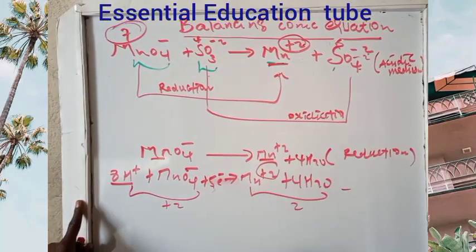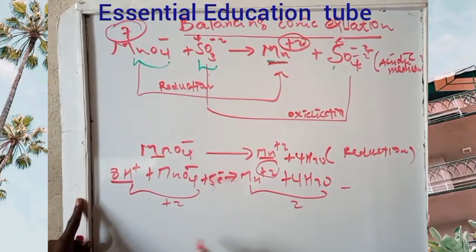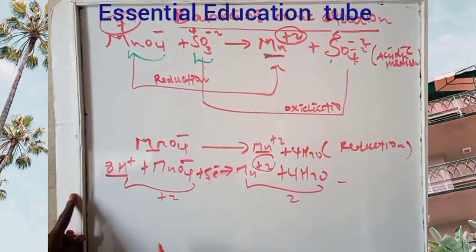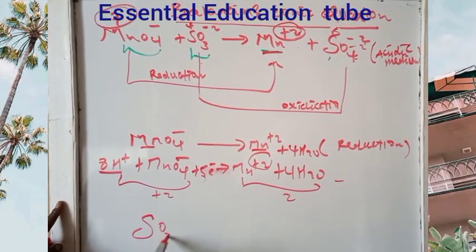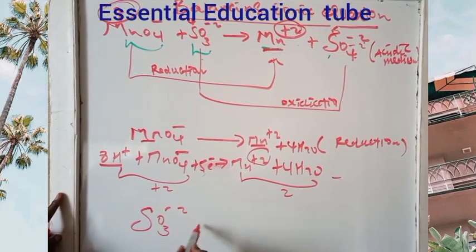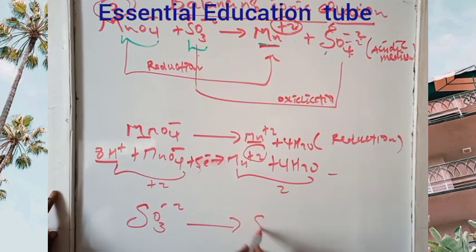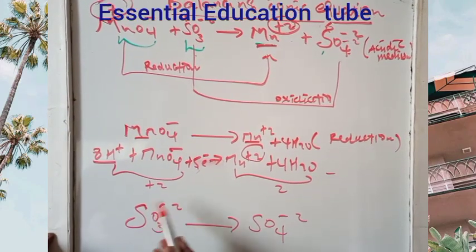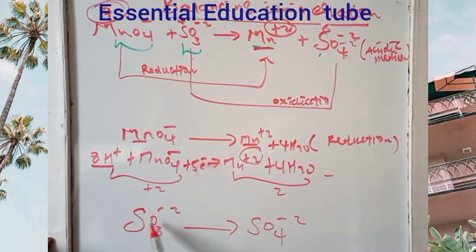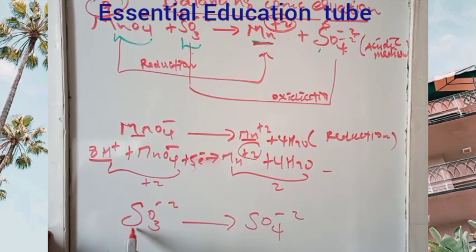For the oxidation half-reaction: SO3²⁻ changes to SO4²⁻. Sulfur goes from +4 to +6, losing 2 electrons. Balancing oxygen by adding water, this half-reaction is balanced.